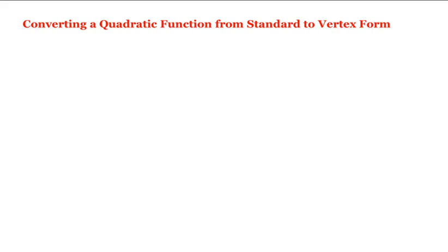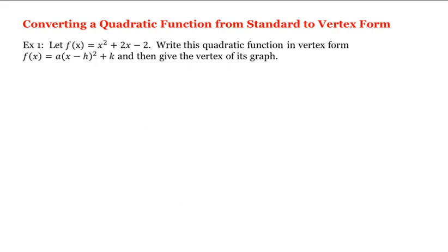Let's learn how to convert a quadratic function from standard to vertex form. For example, let's convert f(x) = x² + 2x - 2 to the vertex form f(x) = a(x - h)² + k, and then we'll give the vertex of its graph.